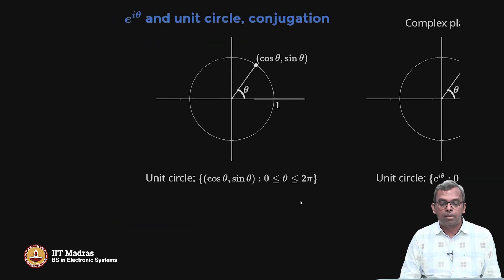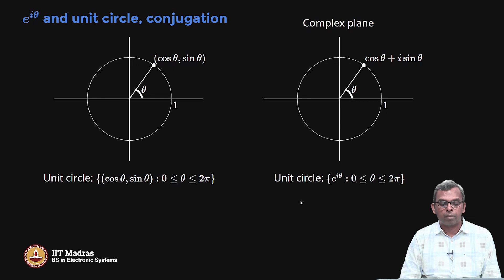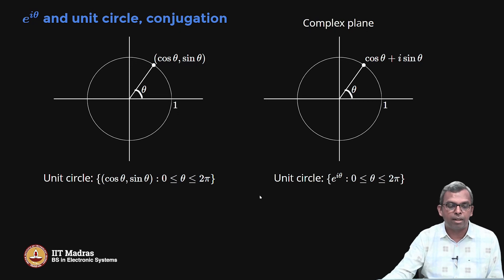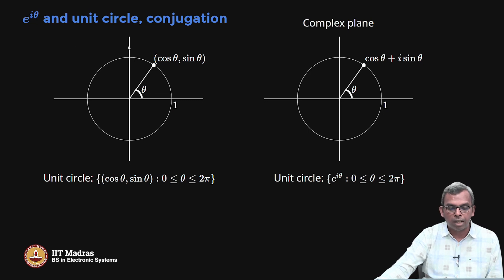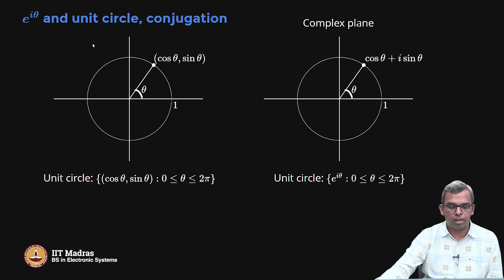Let me connect this to the complex plane. This is the unit circle in the two-dimensional plane — a circle of radius 1. If you have an angle θ from the positive real axis, the corresponding point is (cos θ, sin θ). The unit circle is the set of all points cos θ + i sin θ for θ ranging from 0 to 2π — and that is exactly e^(iθ).